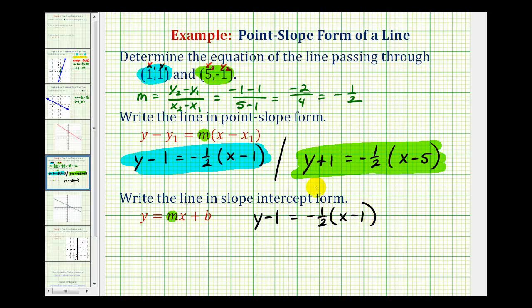we'll start by distributing here. So we'd have Y minus 1 equals negative 1 half X, and this becomes plus 1 half. And then we add 1 to both sides to solve for Y. So now we have Y equals negative 1 half X, and then 1 half plus 1 would be 1 and 1 half.